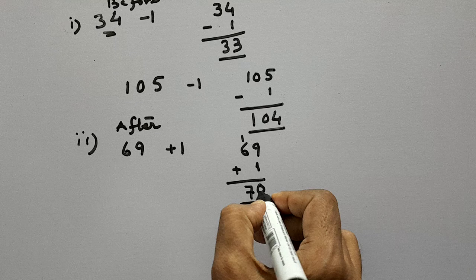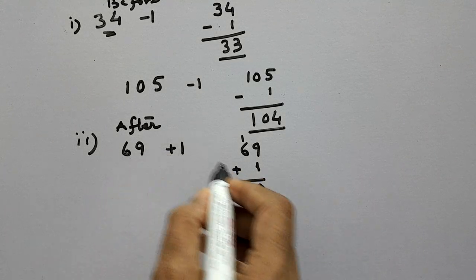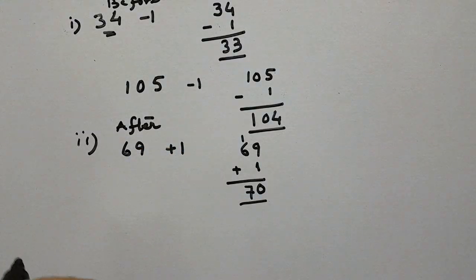So 70 is the number after 69. That means 70 is the successor of 69. Right?